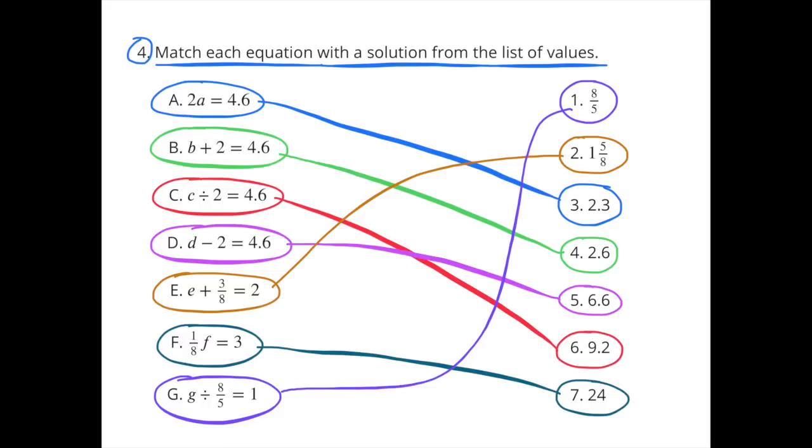F, 1 eighth of F equals 3. I match that up with number 7, because 24 divided by 8 equals 3, or 1 eighth of 24 equals 3. G, G divided by 8 fifths equals 1. I match that up with number 1, because 8 fifths divided by 8 fifths equals 1.